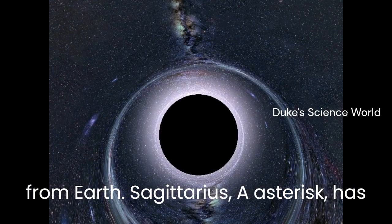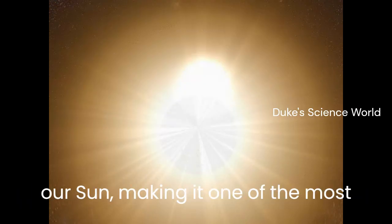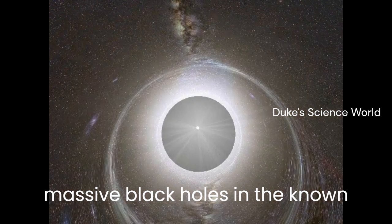Sagittarius A asterisk has a mass of about 4.3 million times that of our Sun, making it one of the most massive black holes in the known universe.